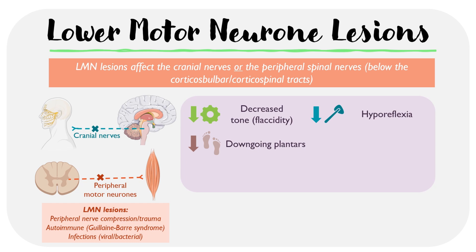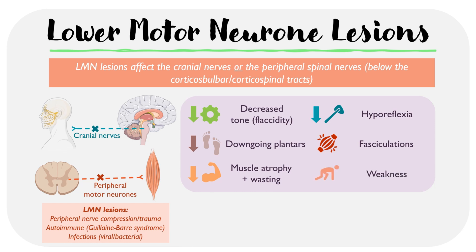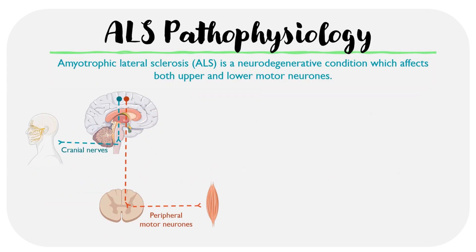We also get some additional symptoms which include fasciculations, which are basically small twitching of muscles, muscle wasting or atrophy — so shrinking of the muscles because they're not being used as frequently — as well as weakness, which is a result of the atrophy process.